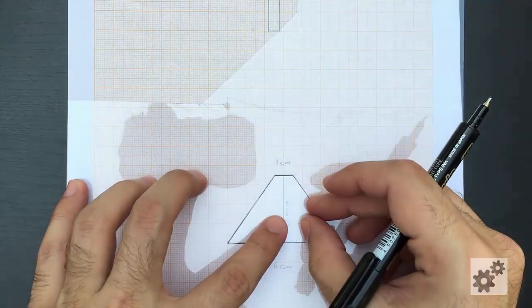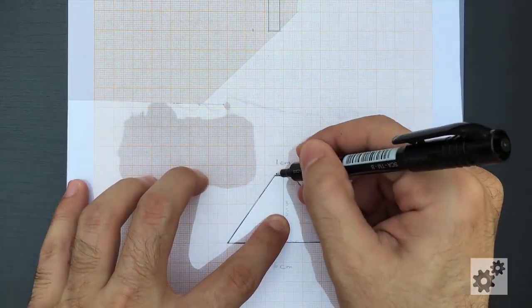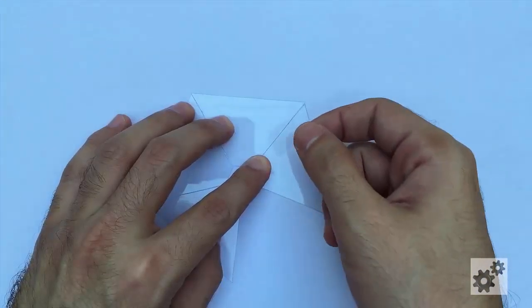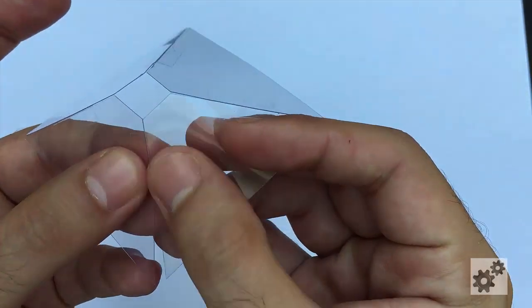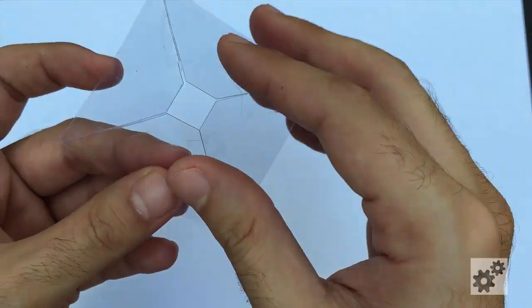Now we need three more of these. You can use the cut out piece to trace the others as well. Once you have all four pieces, stick them together like this using clear cello tape. Make sure your plastic and the tape is as clean and clear as possible.